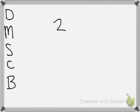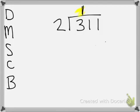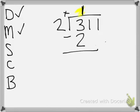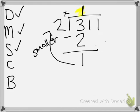Let's do 311 divided by 2. They must divide: how many groups of 2 can you get out of 3? They would say 1. That should be 1 — they're done with divide. Now they're multiplying: 2 times 1 is 2. Now they're at subtract: they have 1. Now they check: is 1 smaller than 2? If yes, then they can bring down the next digit.